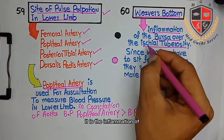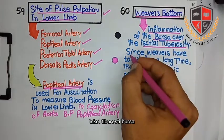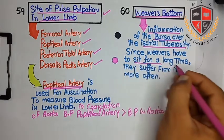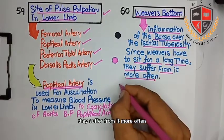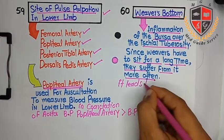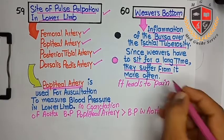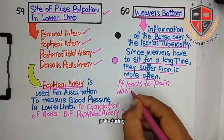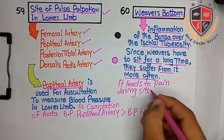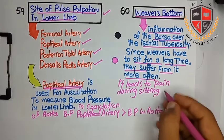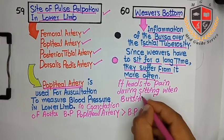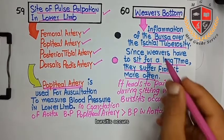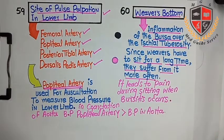The popliteal artery is most commonly used to measure blood pressure. The next clinical is weaver's bottom. It is the inflammation of the bursa over the ischial tuberosity. Since weavers have to sit for a long time, they suffer from it more often. It leads to pain during sitting when ischial tuberosity bursitis occurs.